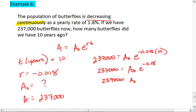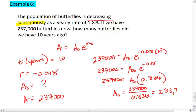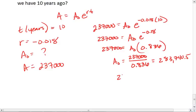Let's just plug this into our calculators. 0.836. I want to divide both sides by that number. So I get A0 equals 237,000 divided by 0.836, which equals 283,740.5, or again, we round up to 283,741 butterflies.